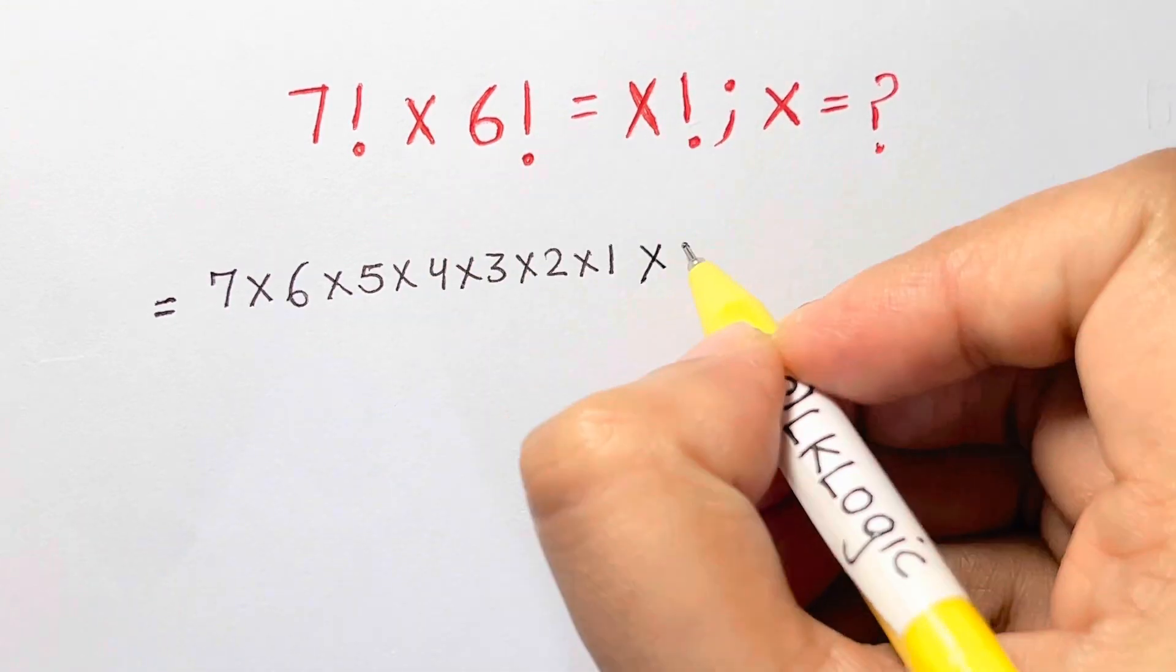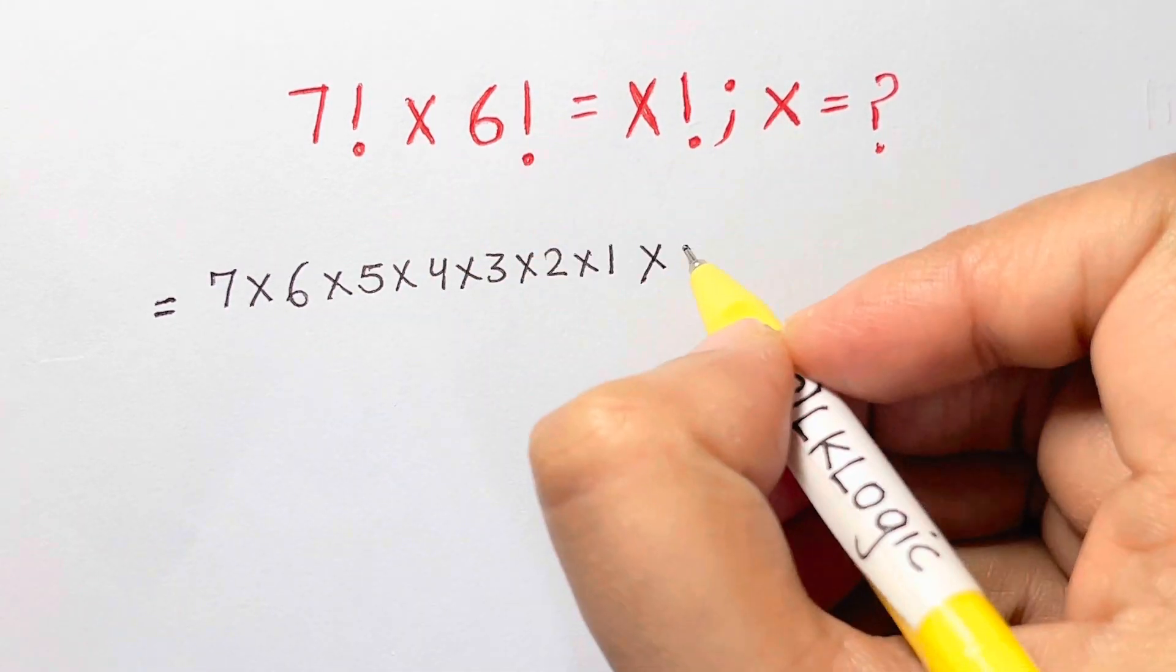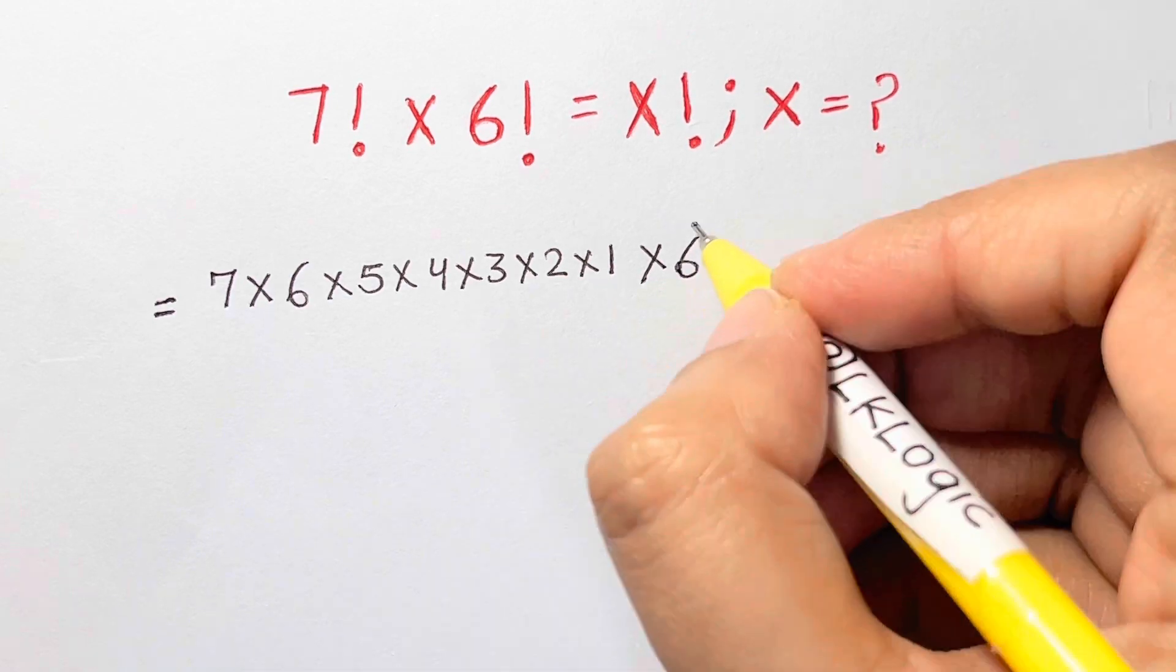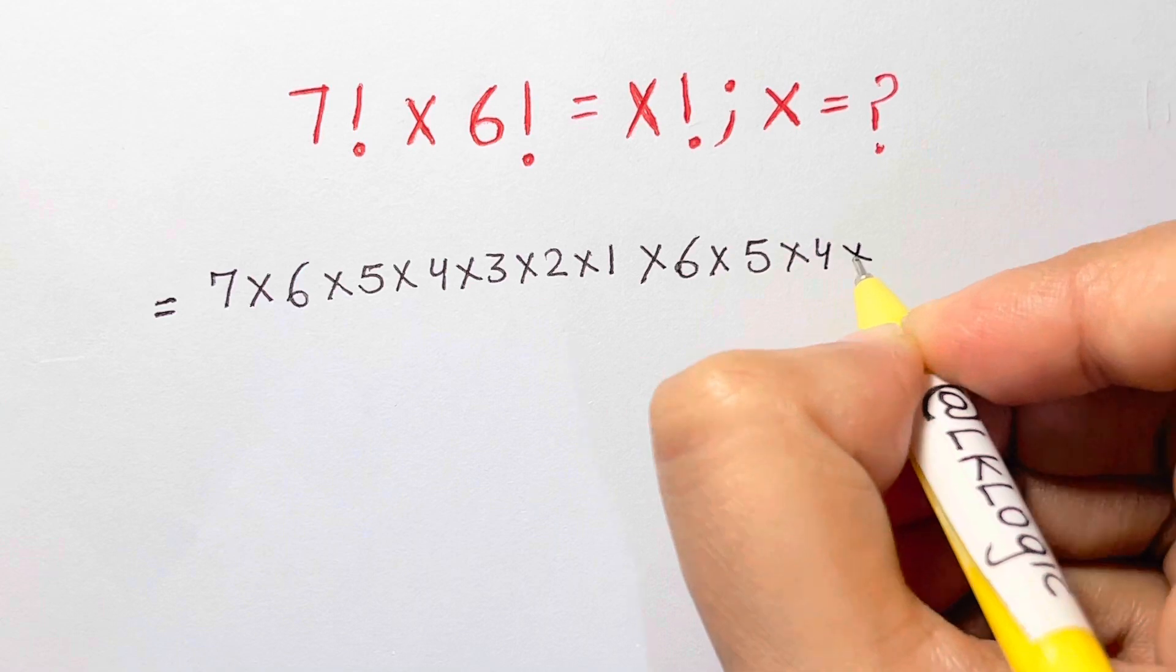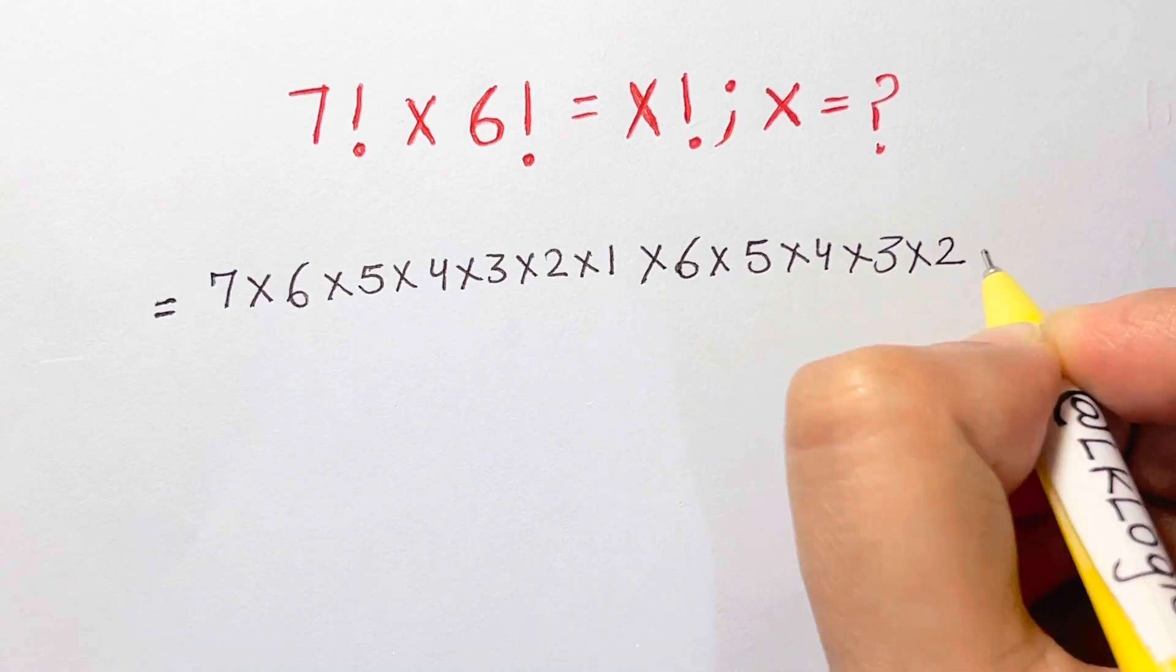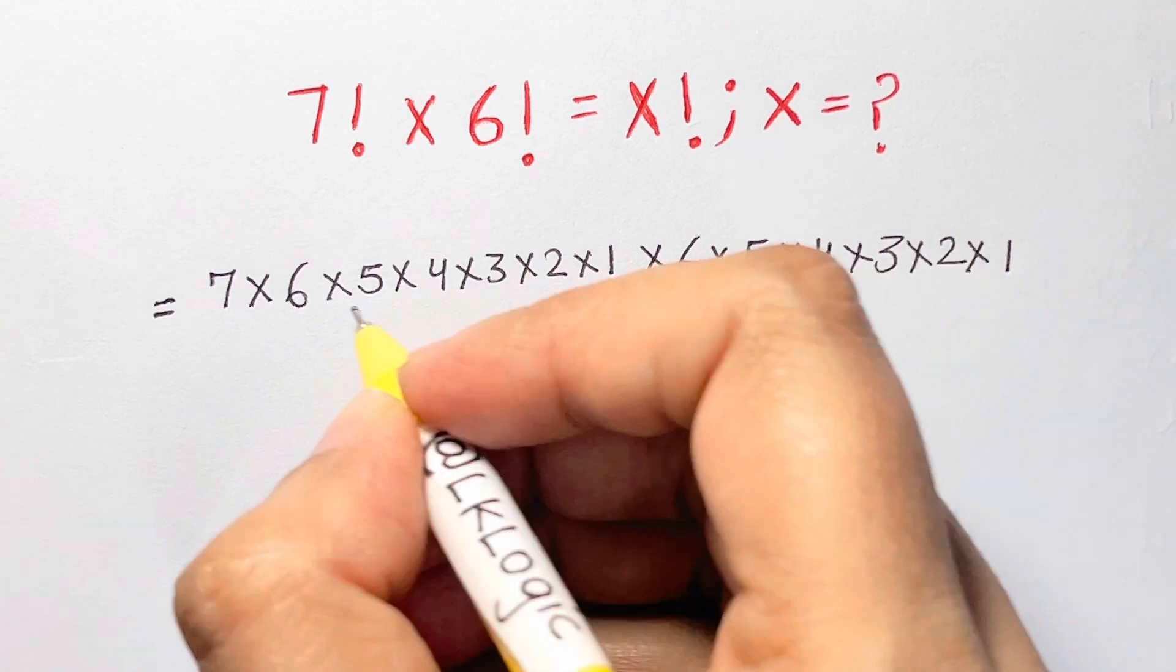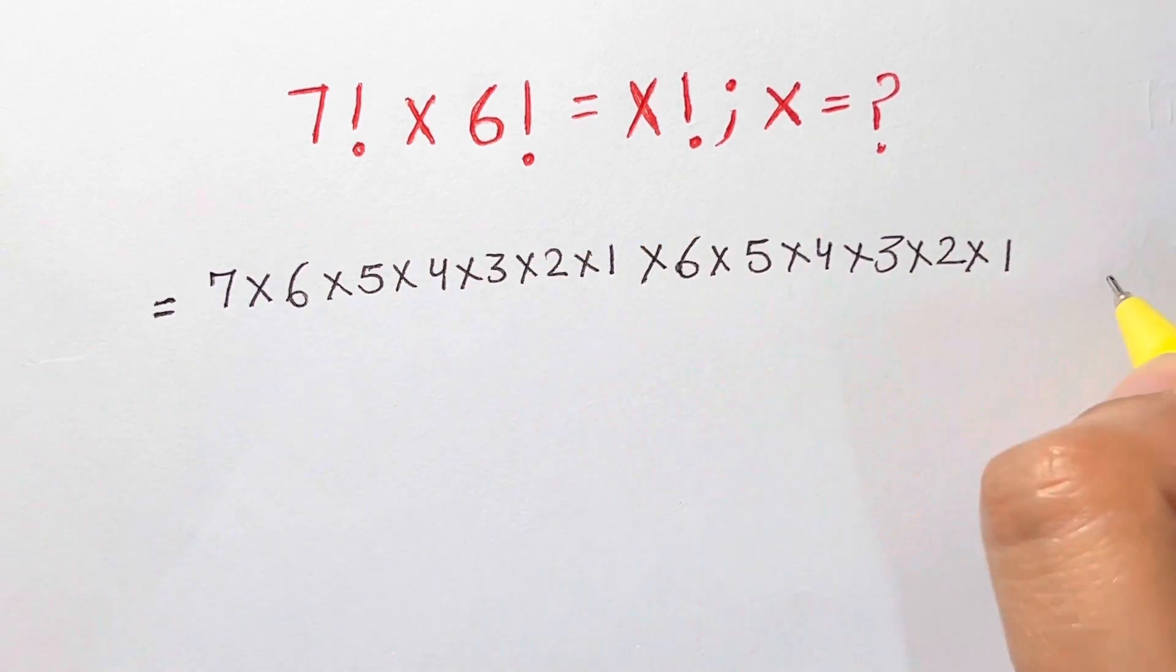6 factorial is again you multiply, start with 6, reduce one digit: that's times 5 times 4 times 3 times 2 times 1 till you reach 1. This is what 7 factorial is, this is 6 factorial. And now, as